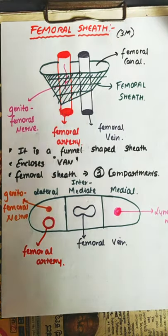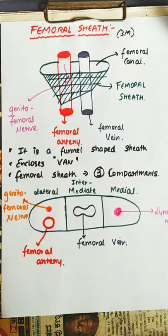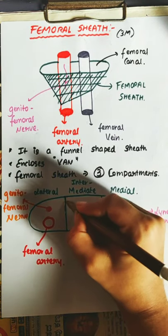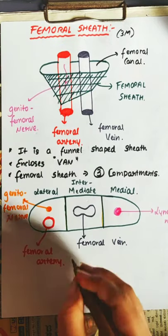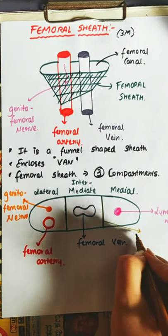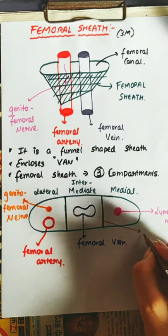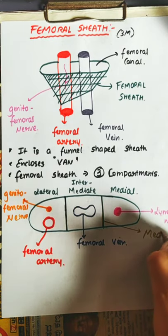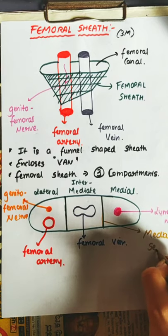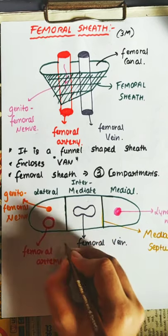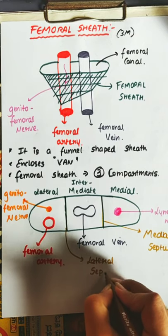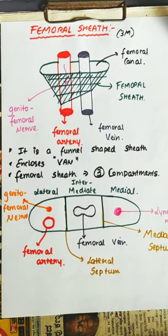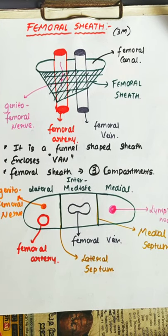Further, in this diagram, you can see there is a septum in between these compartments — they are intermuscular septa. On the medial side, it is called the medial septum. On the lateral side, it is called the lateral septum.